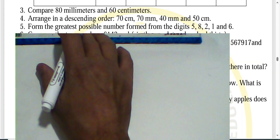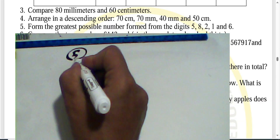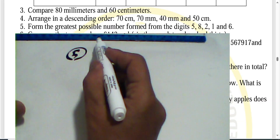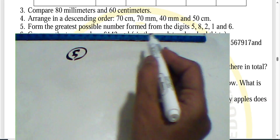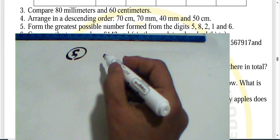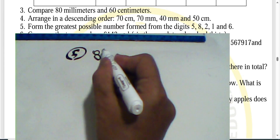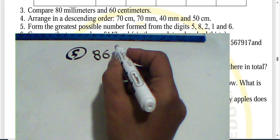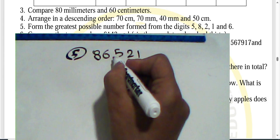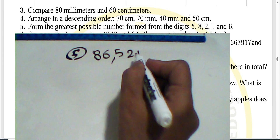Question five: form the greatest possible number from the digits 5, 8, 2, 1, 6. Arrange digits from largest to smallest: 8, 6, 5, 2, 1 — giving the number 86,521.